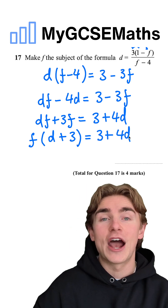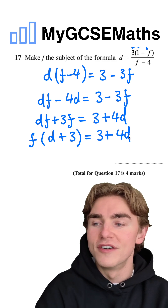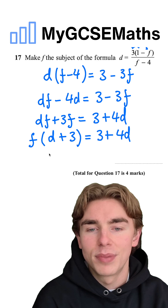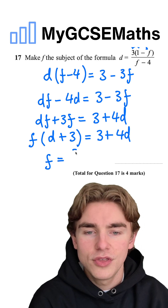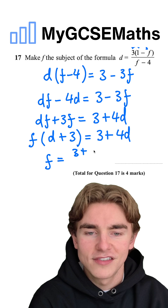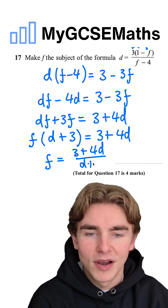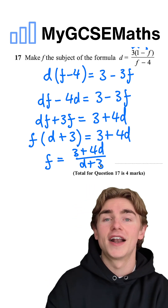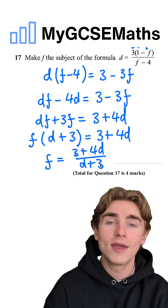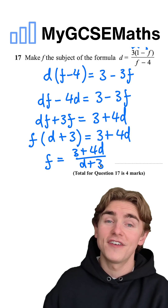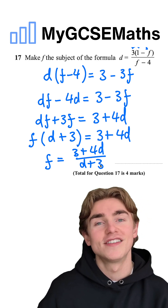Final step: to get f on its own, we divide both sides by (d plus three). So f equals three plus four d over d plus three — and that is our final answer. f is now the subject because we have f equals (three plus four d) over (d plus three).